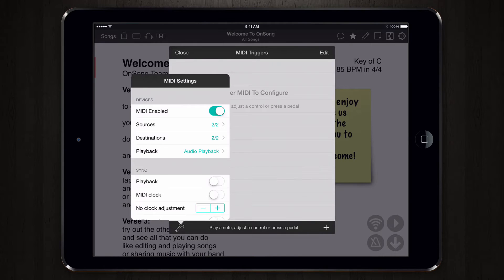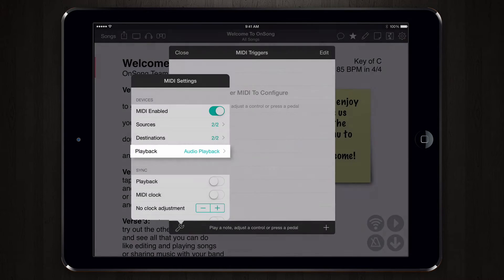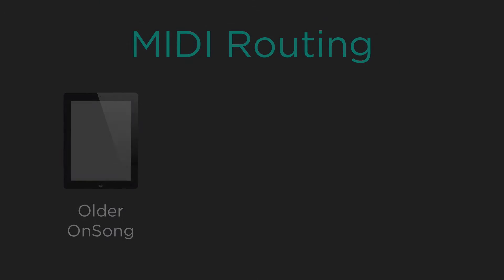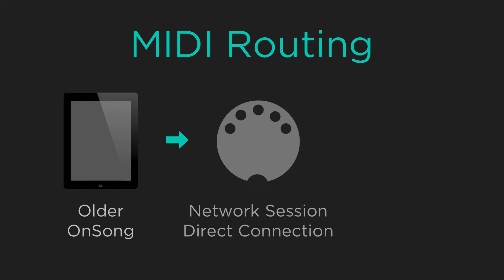Now locate the playback row in the devices section. You'll see it set to audio playback on newer versions of OnSong. On older versions, this would be set to a MIDI destination like network session, direct connection, etc. If there's nothing set up on that destination to turn the MIDI events into sound, no sound will be created.